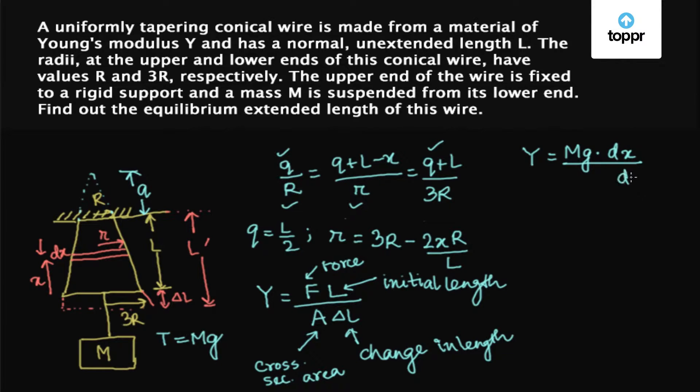So delta Y then becomes DY and area is π into small r square. So we get Y equals MG into DX upon...